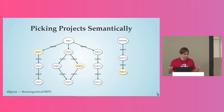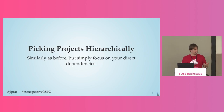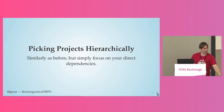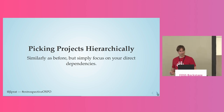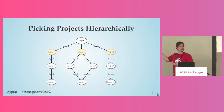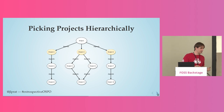If you cannot do semantic selection, you can pick projects hierarchically — going from the first level to the bottom, until you run out of people at the fourth, fifth, or sixth dependency. In this case we'd cover project one, project two, and project three. If we have more people, we go to project four, project five, and so on. You need to pick the approach that works best for you: some business models are better suited to semantic selection, others to hierarchical.